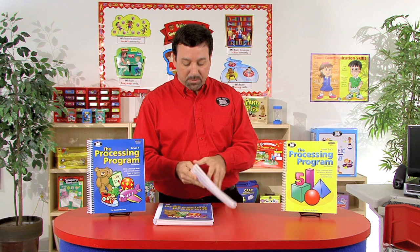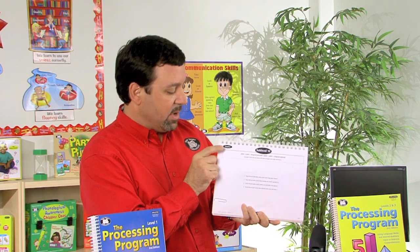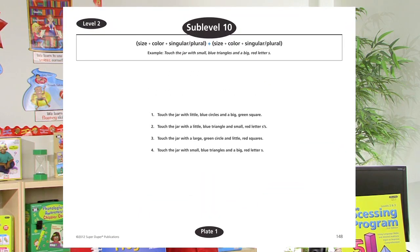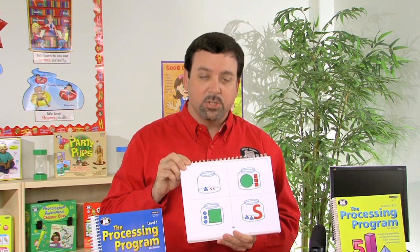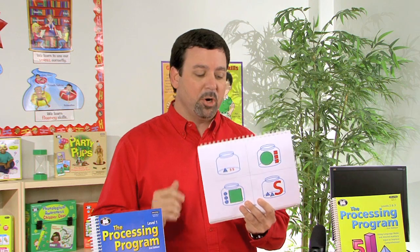Looking at a Level 2 example — sublevel 10 targets size plus color plus singular/plural and size plus color plus singular/plural. The example prompt is "touch the jar with small blue triangles and a big red letter S." Prompts shown to students include: touch the jar with little blue circles and a big green square; touch the jar with a little blue triangle and small red letter S's.